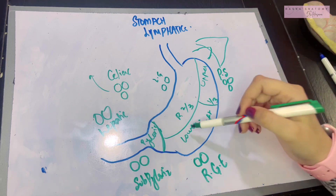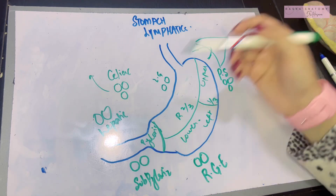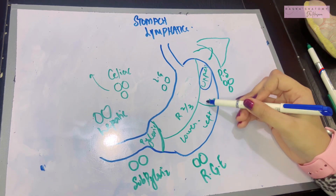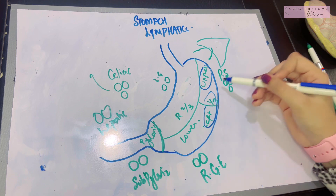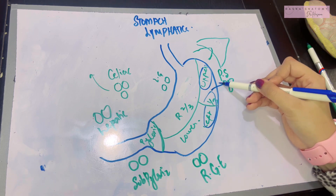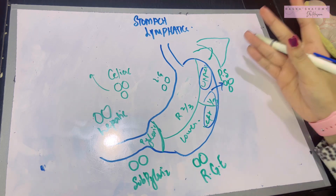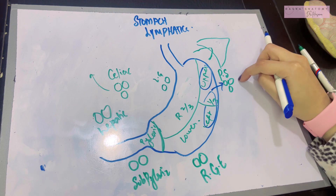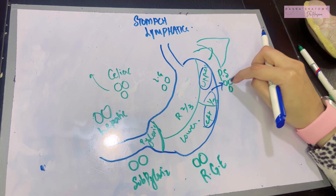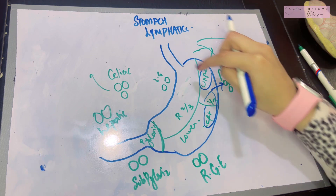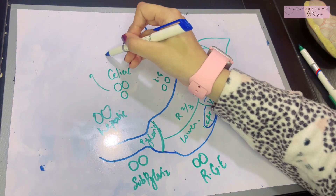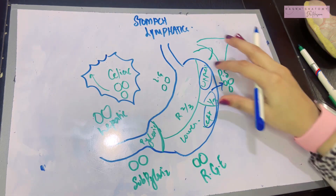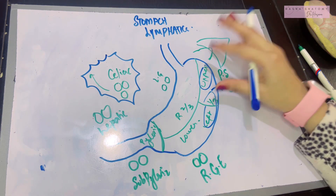The lymph from the upper part of the left one-third drains into the pancreatic splenic lymph nodes, and from the pancreatic splenic lymph nodes the lymph will eventually go into the celiac lymph nodes. So we've drained the upper left one-third of the stomach.